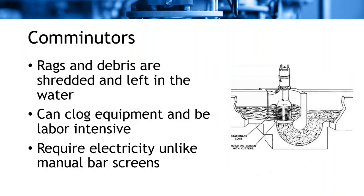One type of screening device typical in smaller plants is a comminutor, which combines a grinder and a pump. It shreds rags and debris and leaves them in the wastewater where they can be digested in a secondary process. These are useful because you don't need a bar screen, but they can clog equipment, are labor-intensive, and require electricity, which manual bar screens do not.